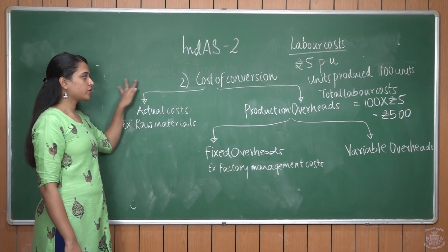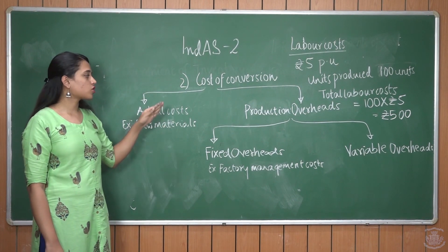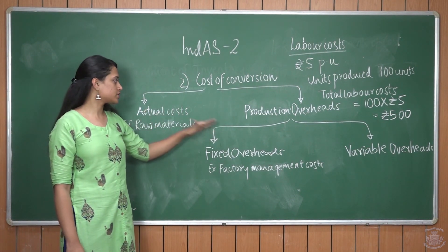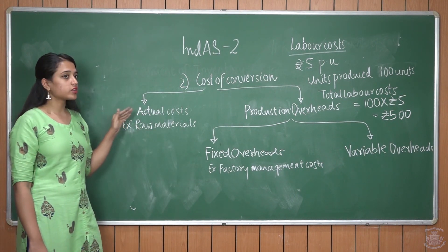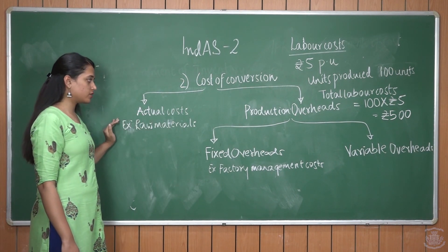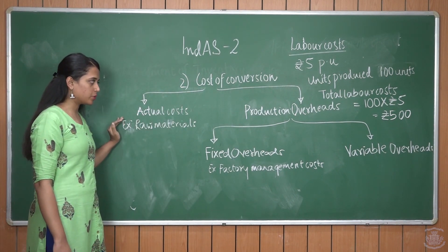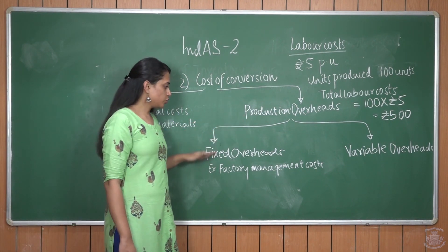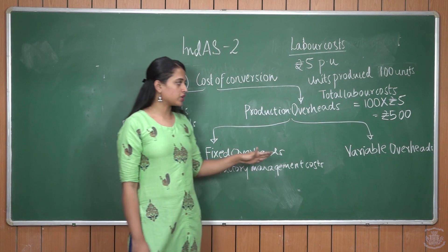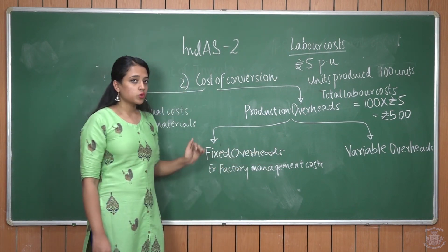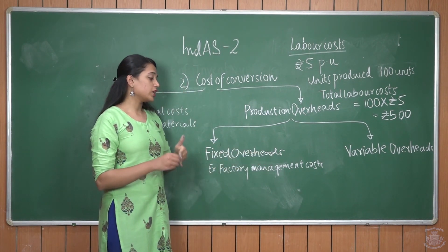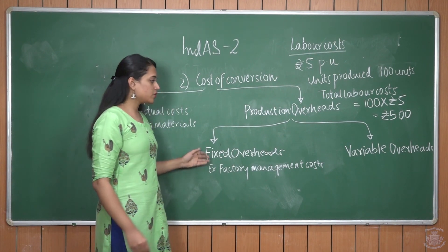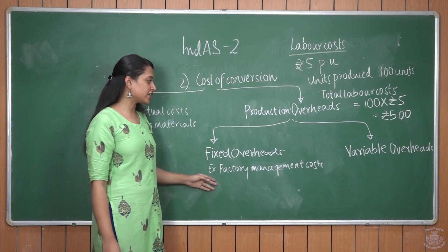The second component of cost is cost of conversion. Cost of conversion is of two types: actual cost and production overhead. Actual costs are direct costs like direct raw materials and direct labour. Production overheads can be divided into two types: fixed overheads and variable overheads. Fixed overheads are expenses incurred irrespective of the quantity produced, for example factory management costs and factory rent.